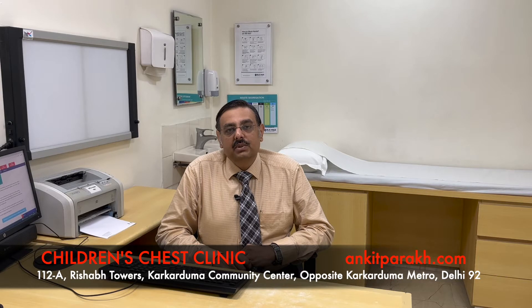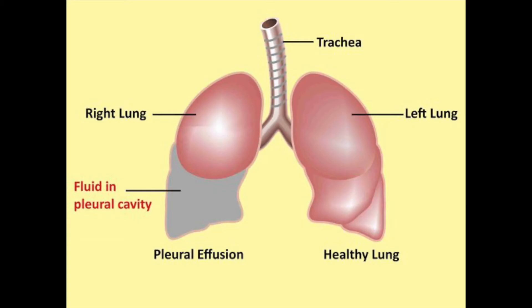Our lungs and our chest wall are lined by a thin membrane which is called the pleura. In between the two pleura there is a small amount of fluid which is called pleural fluid. The function of this pleural fluid is to lubricate the movement of the lung inside the chest. Sometimes the amount of pleural fluid starts increasing and this situation is called pleural effusion. Here we will discuss the causes, symptoms, diagnosis, and treatment of pleural effusion in children.